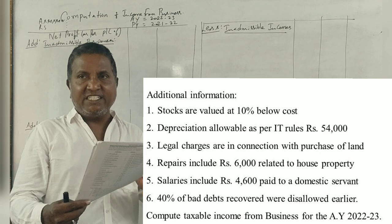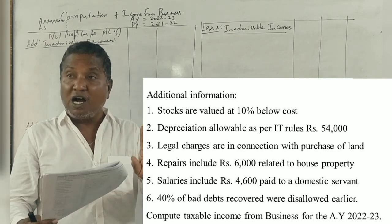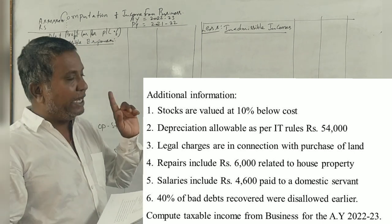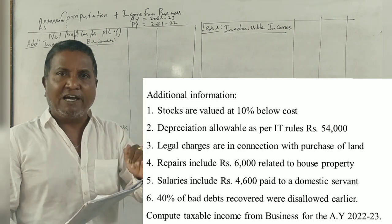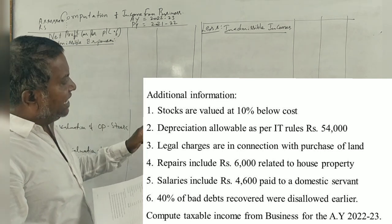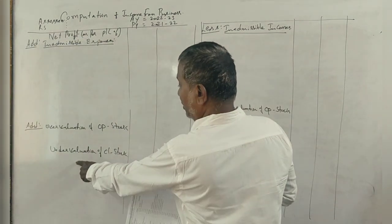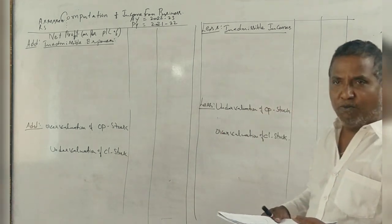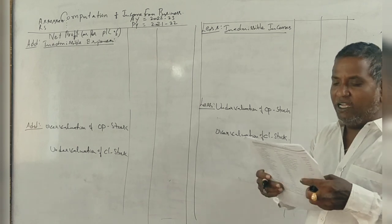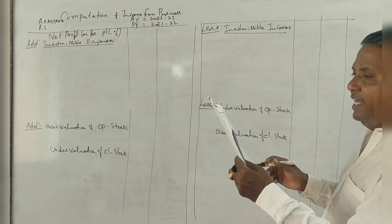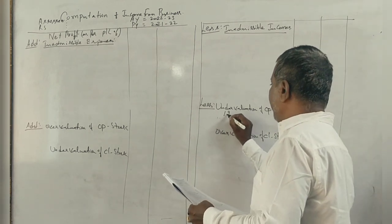First adjustment: stocks are valued at 10% below the cost - opening stock and closing stock. Below means undervalued. Undervaluation of the closing stock affects the profit and loss account. So the opening stock is undervalued. It is in the profit and loss account for 1,24,000.